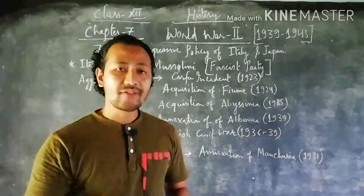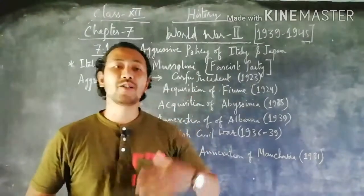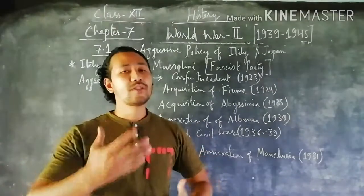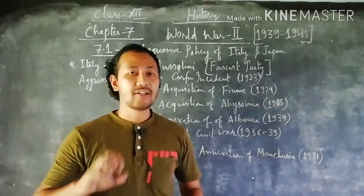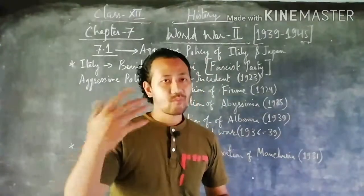After 1931, in the year 1933, Manchukuo was also captured. Lots of provincial areas of China were affected or captured by Japan. When China informed the League of Nations by writing a letter...